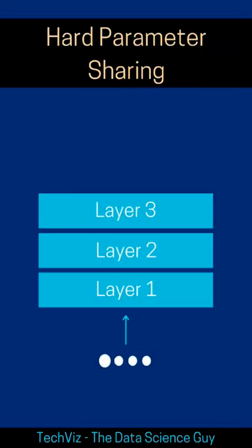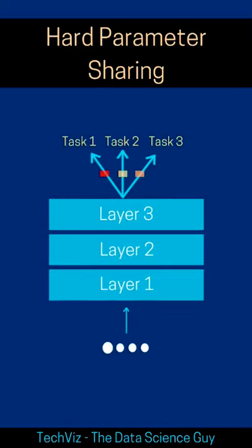Post which we pass this representation to task-specific layers for learning parameters centric to the task. As we backpropagate, we train these task-specific layers and these common layers.